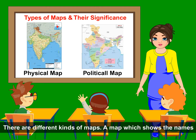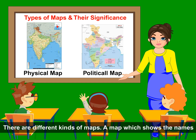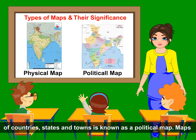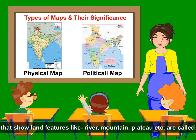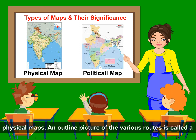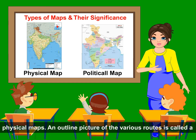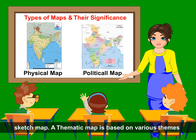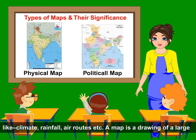There are different kinds of maps. A map which shows the names of countries, states and towns is known as a political map. A map that shows land features like rivers, mountains and plateaus is called a physical map. An outline picture of the various routes is called a sketch map. A thematic map is based on various themes like climate, rainfall, air routes, etc.